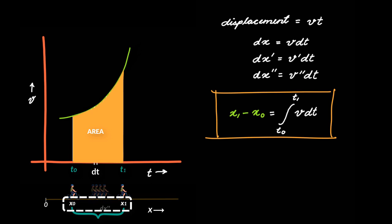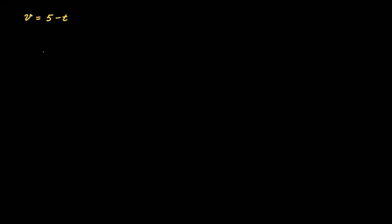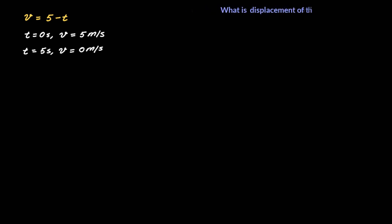So let us work around a simple problem that will make things a lot clearer for you. The problem is that we have an object whose velocity is related to time as v is equal to 5 minus t. So at t equal to 0, velocity is 5 meters per second, and at t equal to 5 seconds its velocity becomes 0. You're asked: what is the displacement of this object in 5 seconds? So let us use this graphical integration technique to find the displacement between t equal to 0 seconds and 5 seconds, and the first step would be to make the velocity-time graph for this equation.